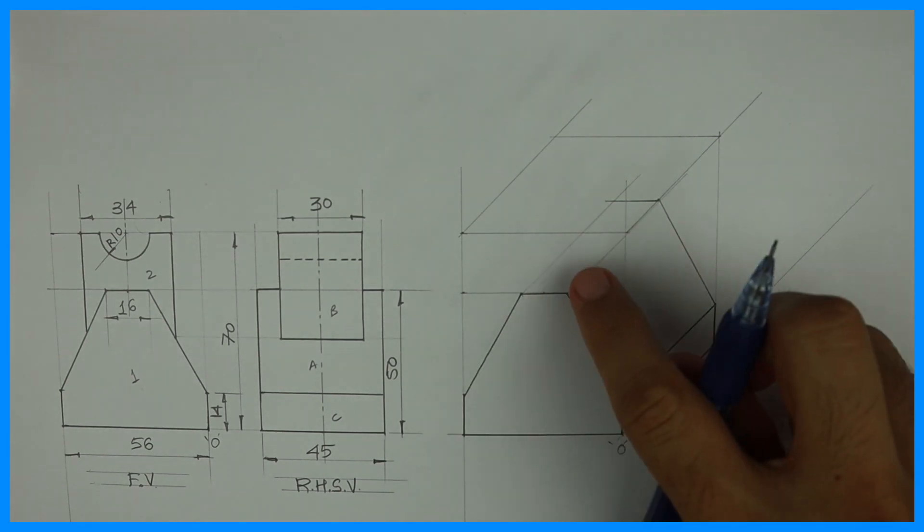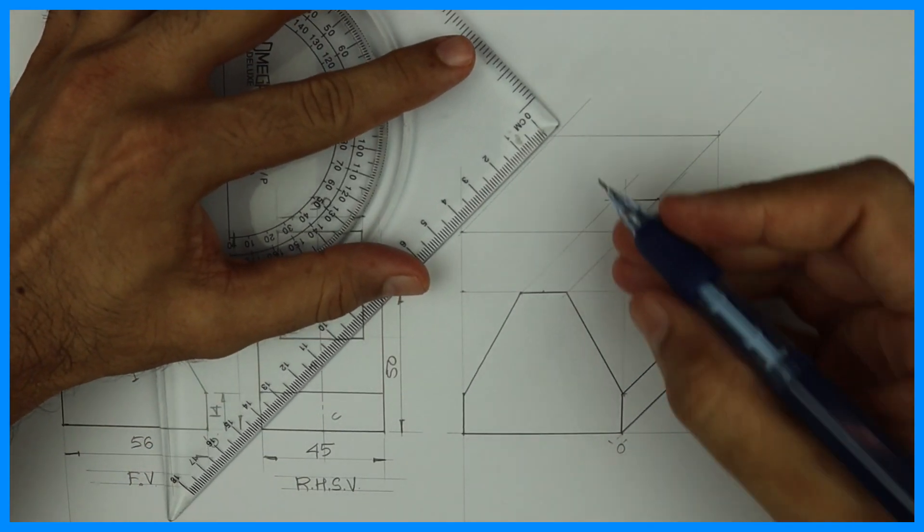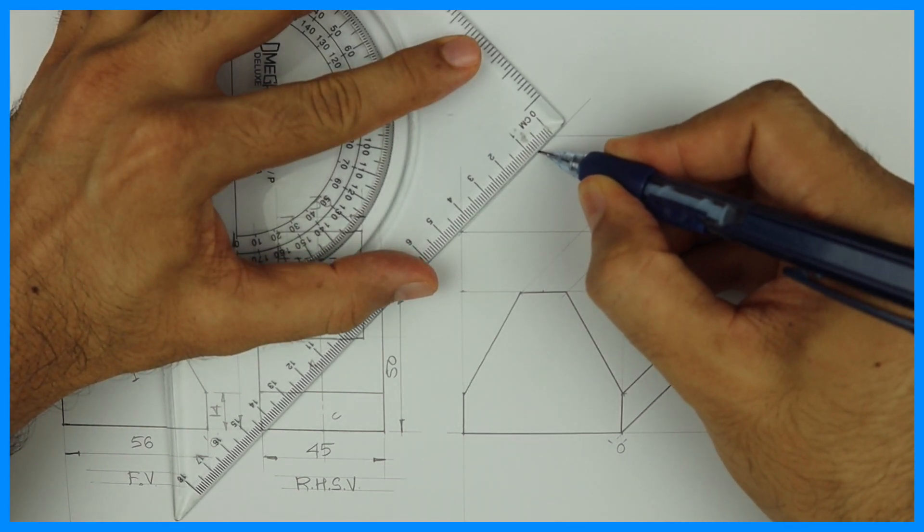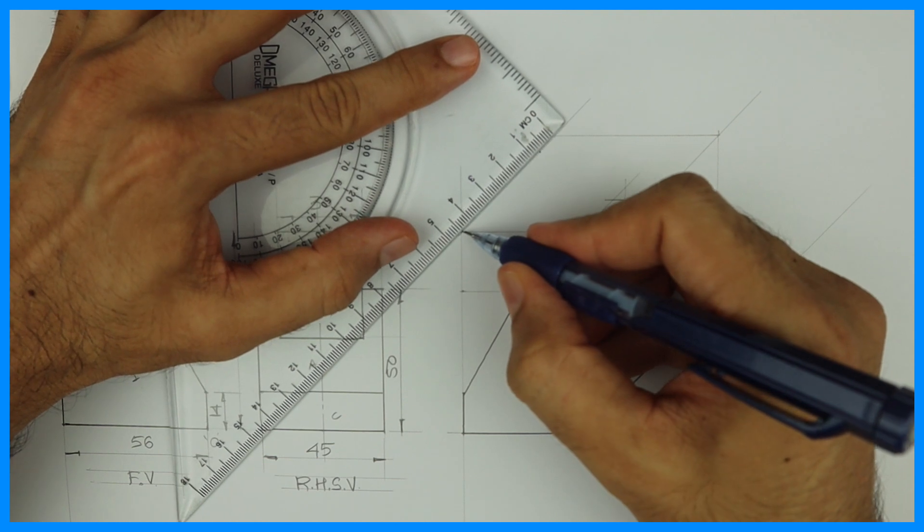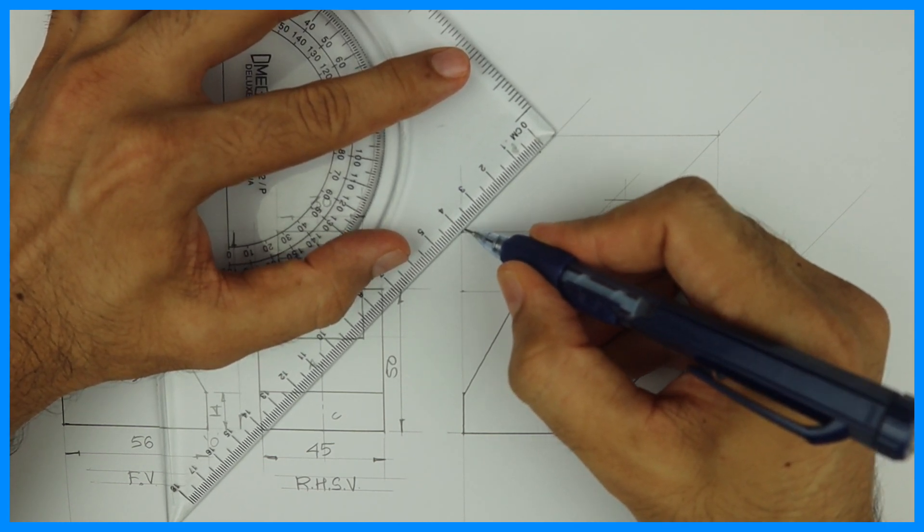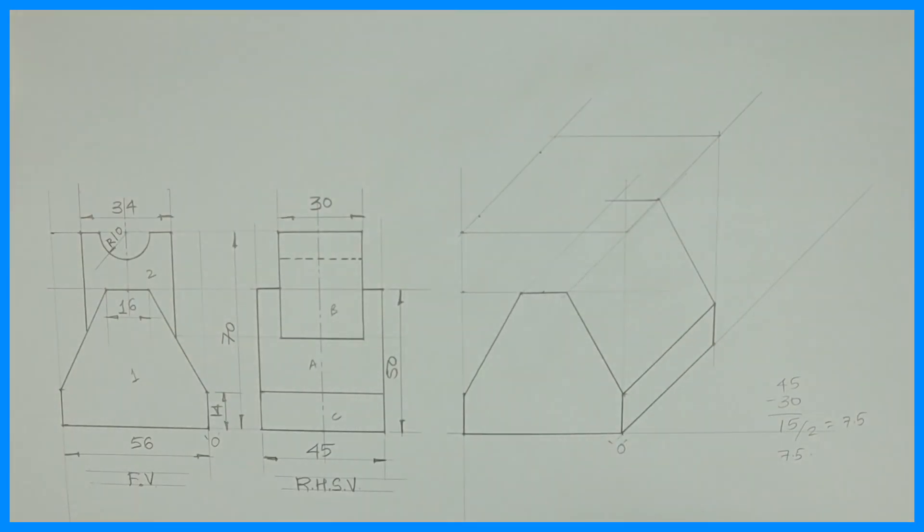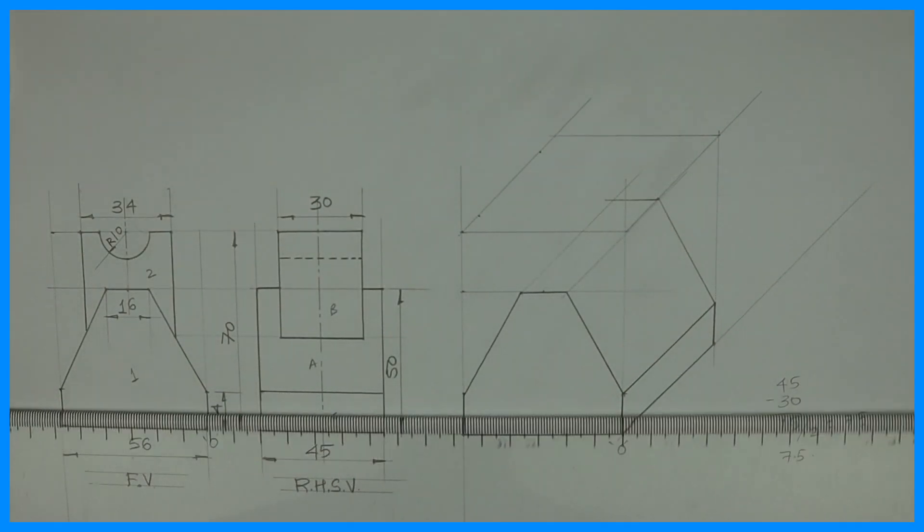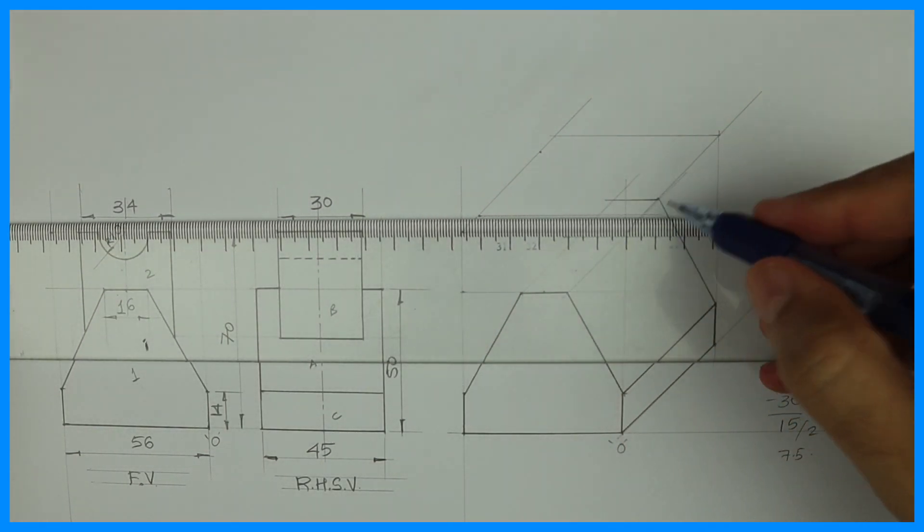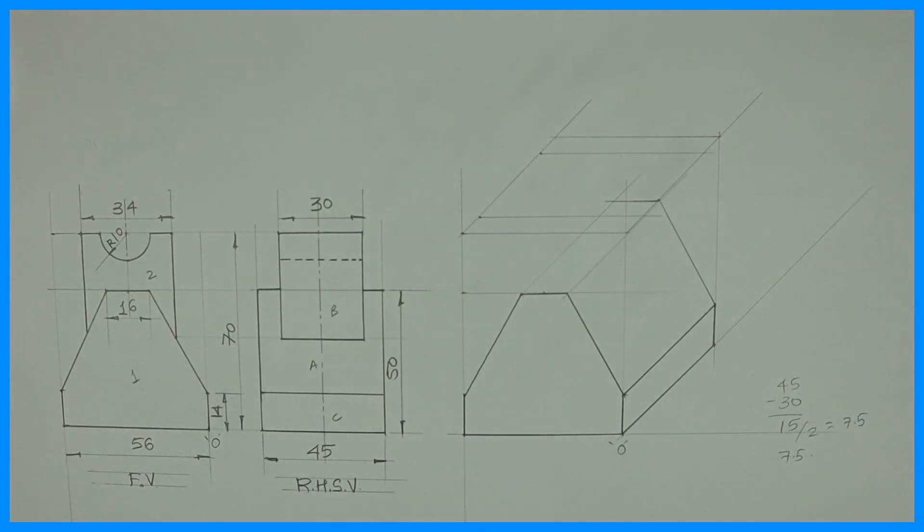So what we need to do is we need to take 7.5 from ahead. See, on this line we'll mark 7.5 from behind and 7.5 from ahead. See, total we need to remove 15, so I'm removing 15: 7.5, 7.5, and then I'm drawing that line. So part two will start from here.